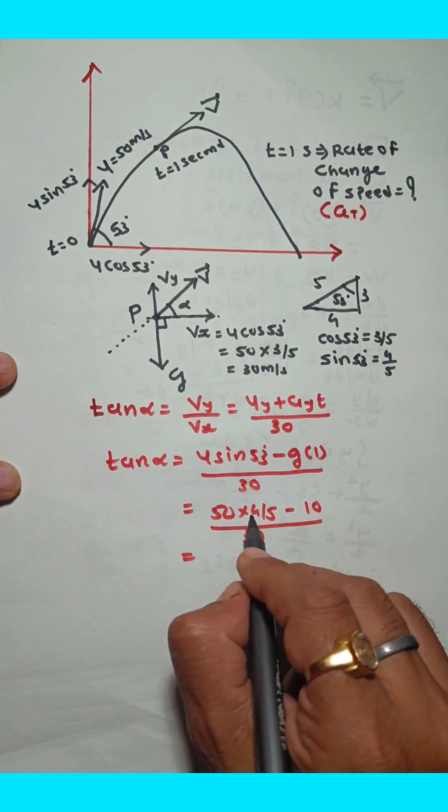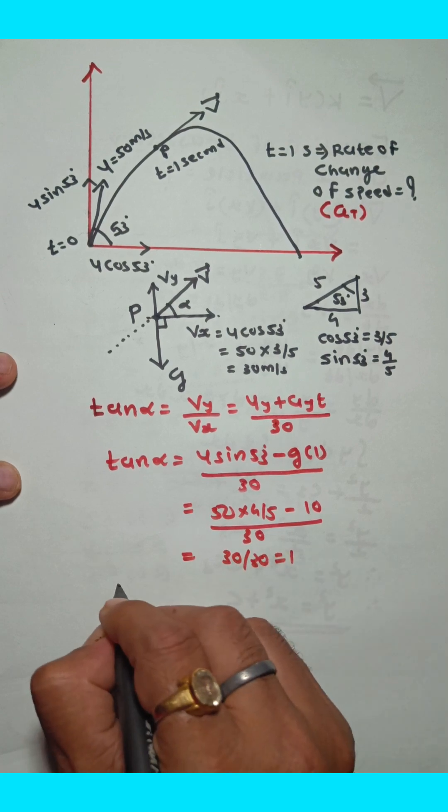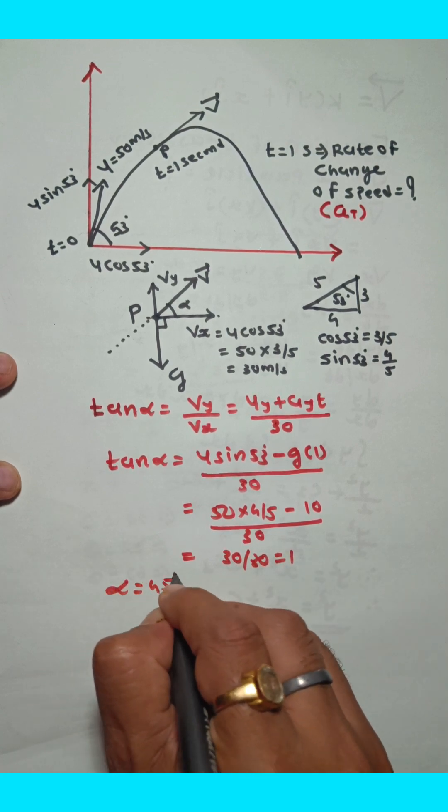50 divided by 5 is 10. 10 times 4 is 40. 40 minus 10 is 30. So 30 divided by 30 equals 1. Tan alpha is 1, so alpha equals 45 degrees.